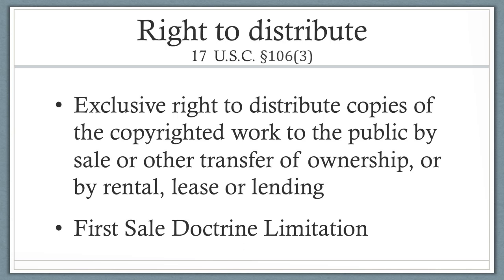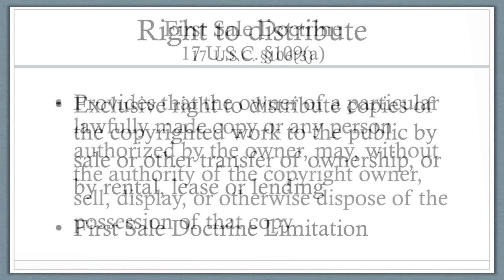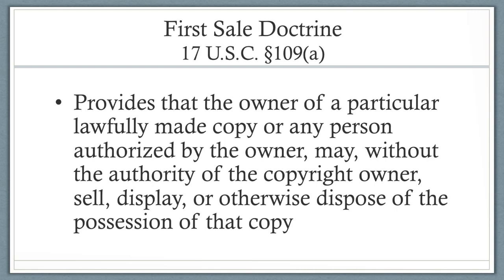The right to distribute is the exclusive right to distribute copies of the copyrighted work to the public by sale or other transfer of ownership, or by rental, lease, or lending. Under this provision, the copyright owner has the right to control the first public release and distribution of an authorized copy, either in physical or digital format. However, an important limitation exists under the first sale doctrine. The first sale doctrine provides that the owner of a particular lawfully made copy, or any person authorized by the owner, may — without the authority of the copyright owner — sell, display, or otherwise dispose of the possession of that copy. Once the copyright owner of a particular item has parted with ownership of it, the copyright owner's right to distribute ceases.